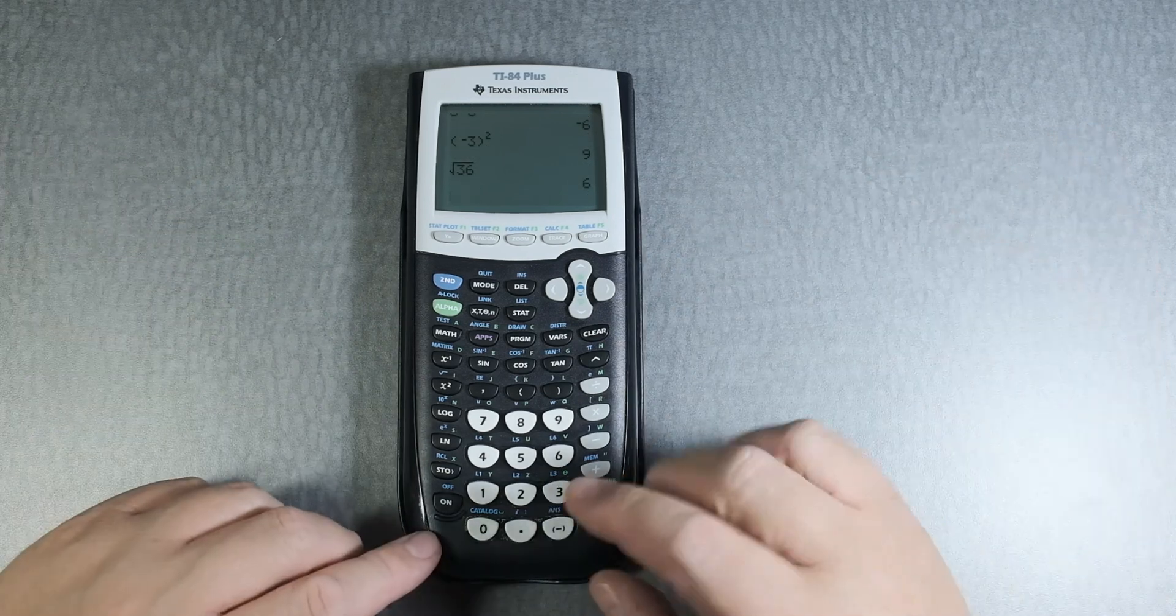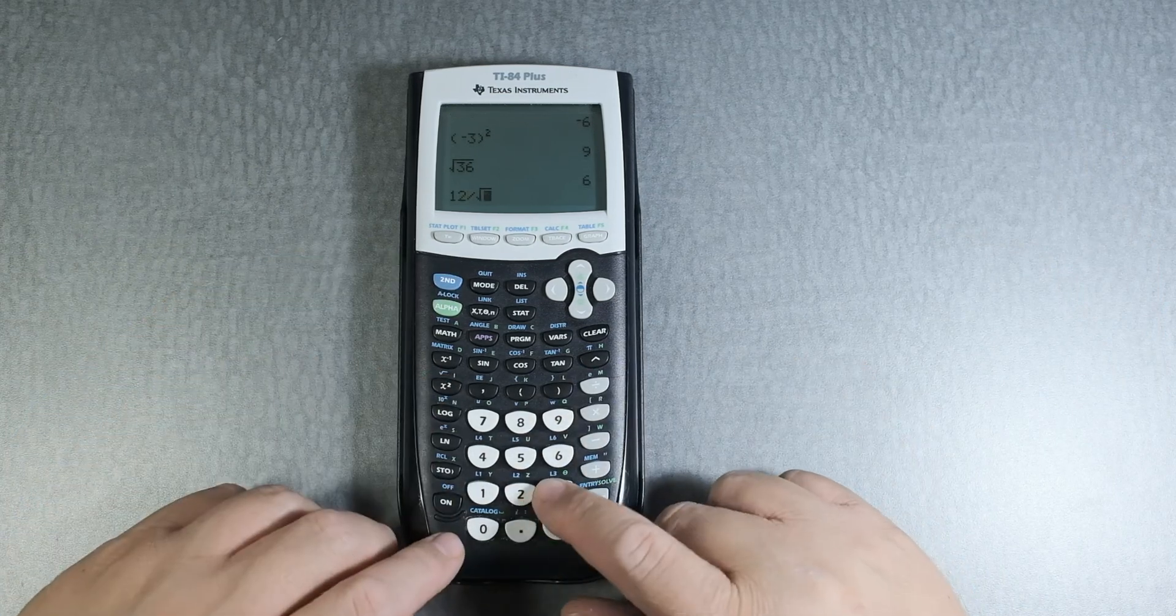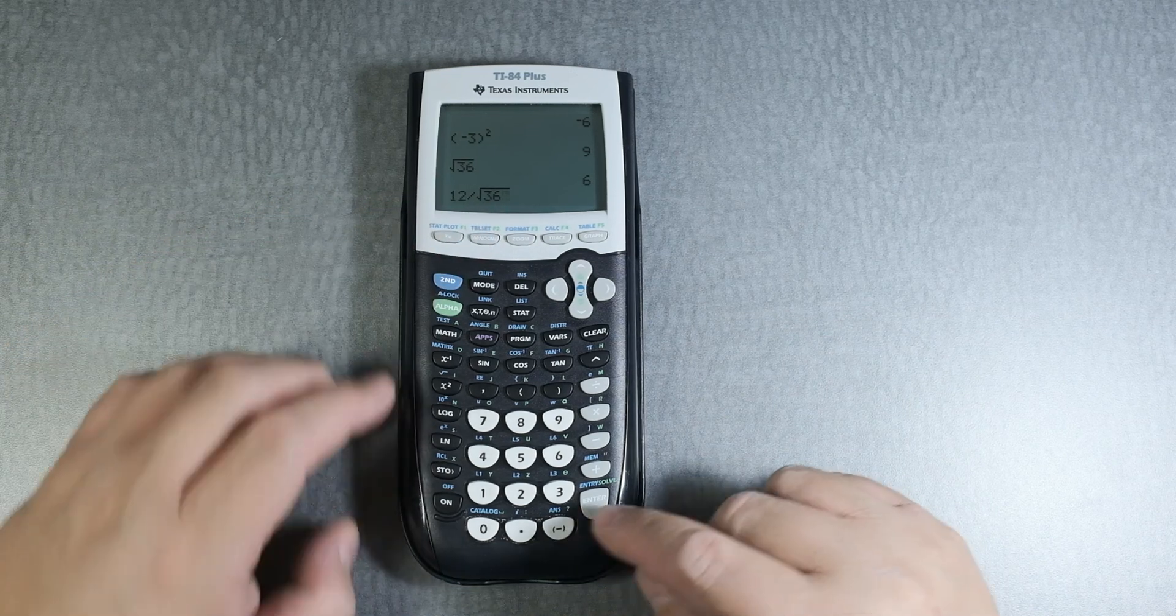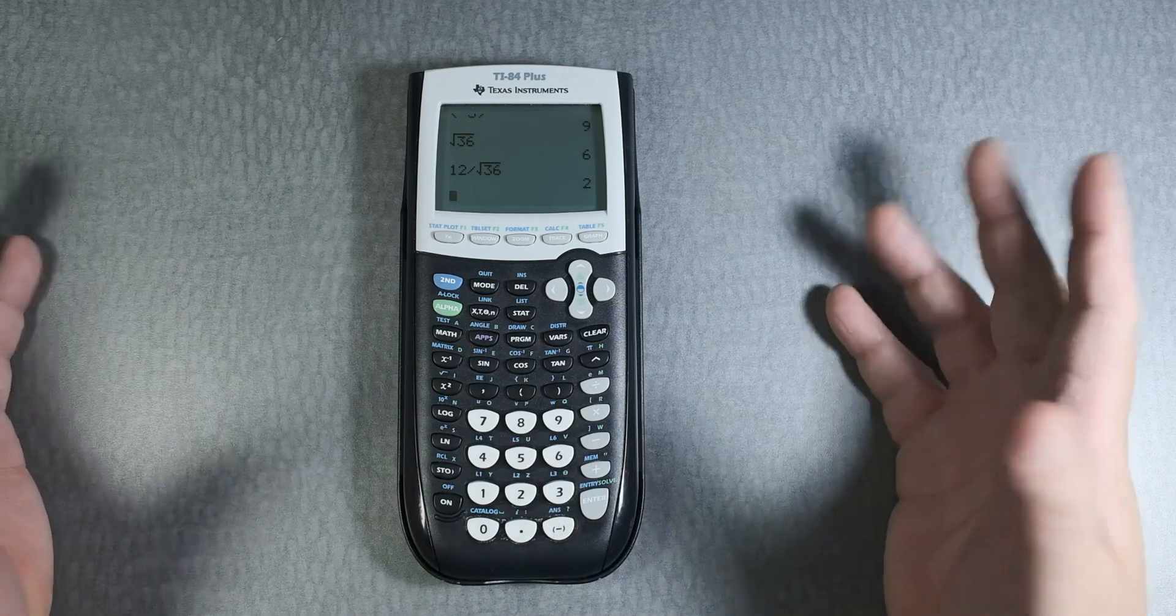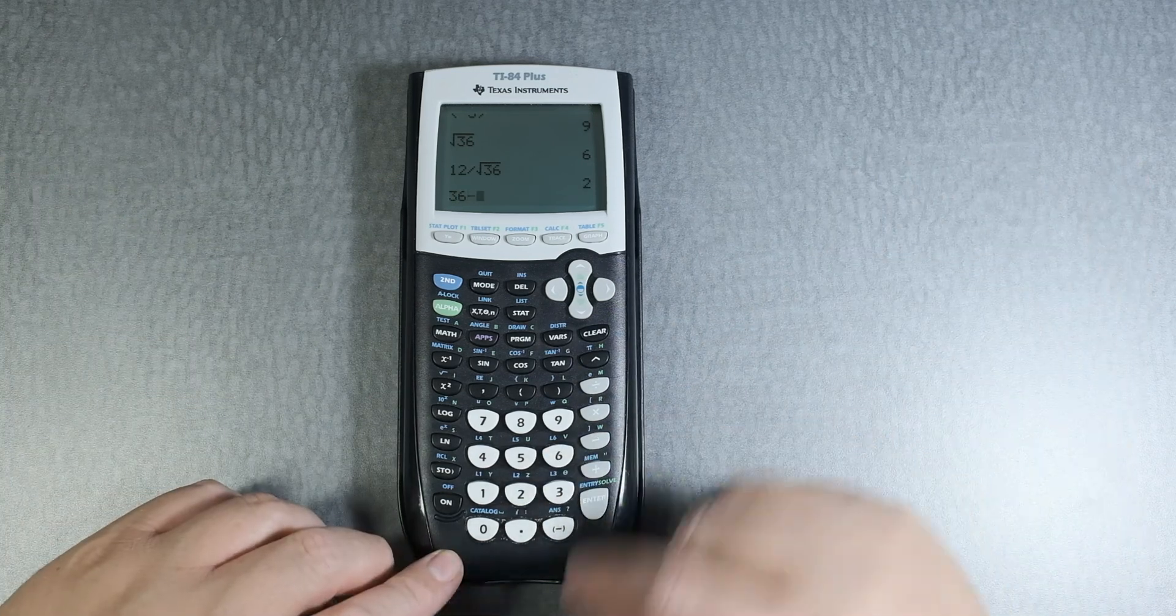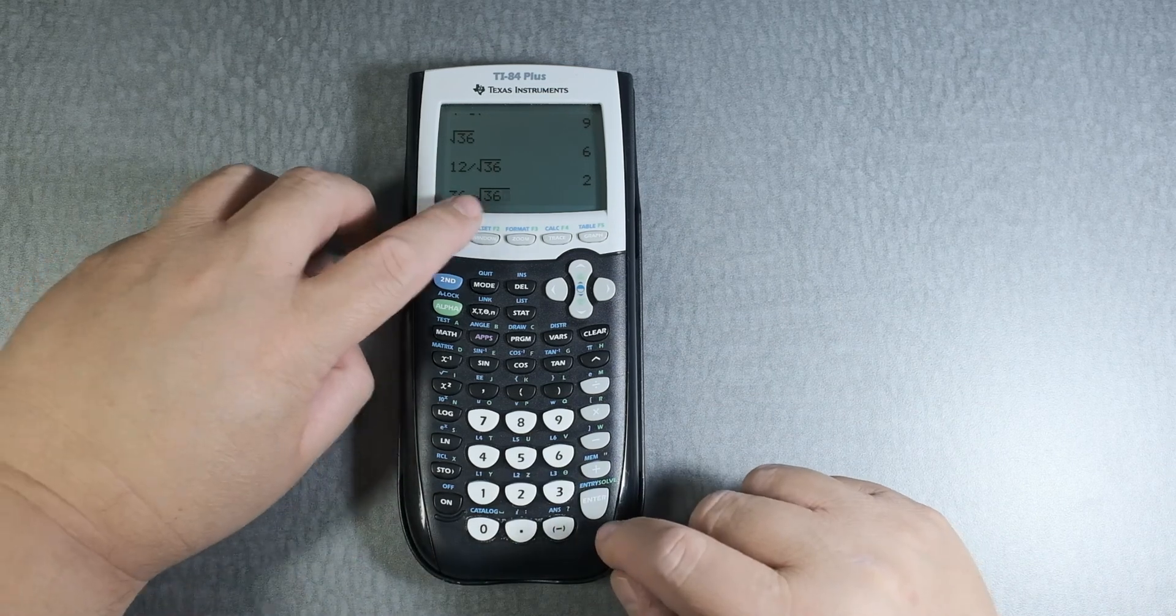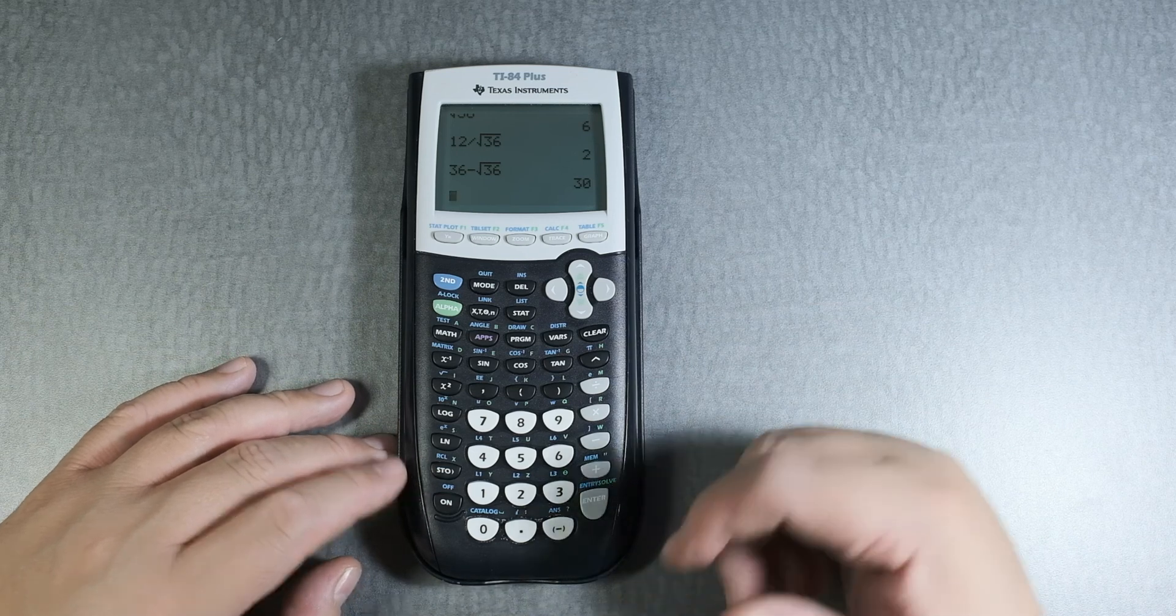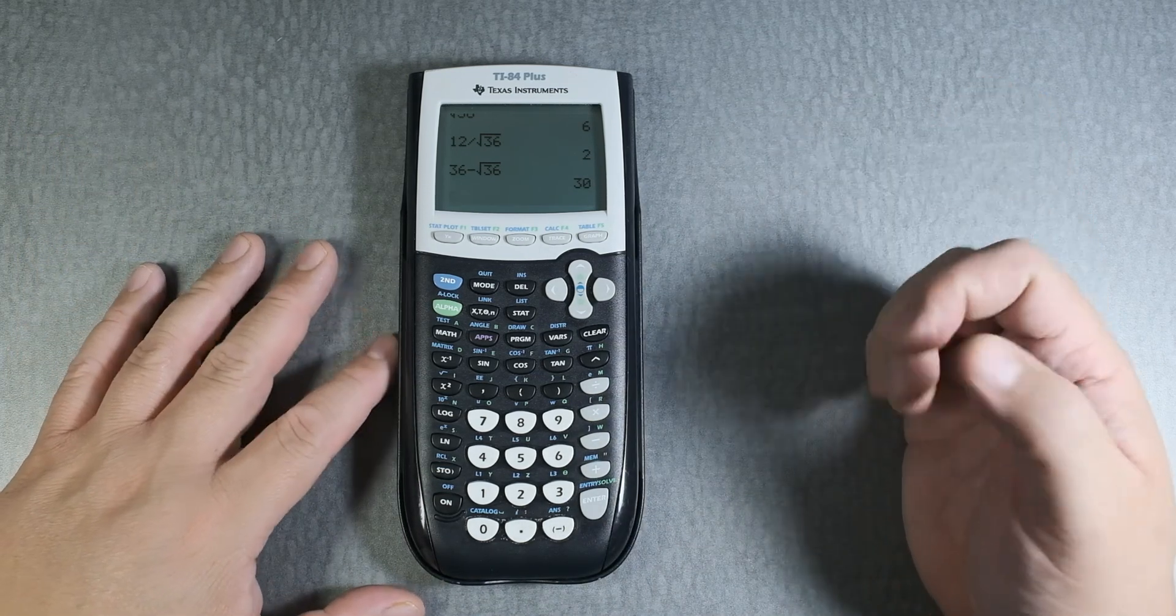And of course, you can say something like 12 divided by the square root of 36, right? Which will give you 2. 12 divided by 6 will give you 2. Let's say 36 take away the square root of 36. 36 take away 6, which will give you 30. So that's how you use the squaring and the square root.